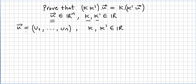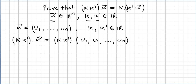So u in the vector space Rn will be a vector with components u1, u2, u3, ..., un, and k and k' will be scalars. So what is (k times k') times vector u? It will be k times k' times vector u, where vector u is (u1, u2, ..., un).